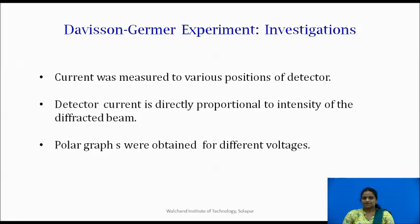So the analysis of this experiment was done by the investigations as the current was measured to various positions of the detector. Then detector current is directly proportional to the intensity of the diffracted beam. And lastly the polar graphs were obtained for different voltages.